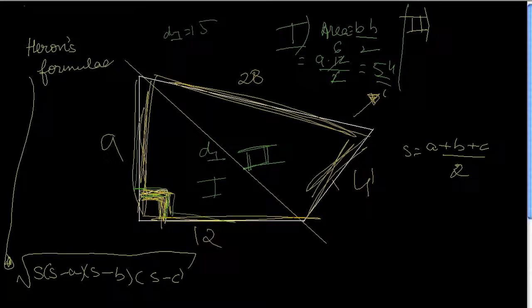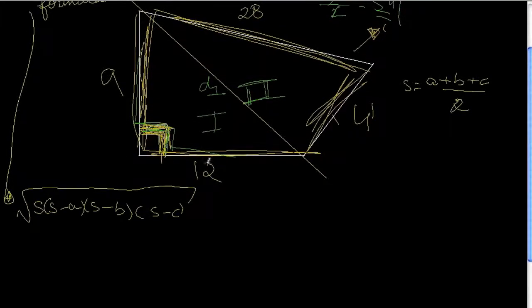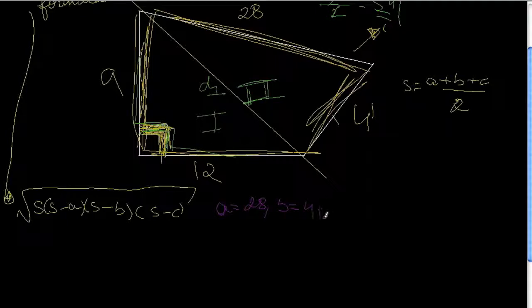So in this video, I'll continue with telling you how to find the area of any quadrilateral, case 2. So in triangle 2, let's define A as 28, B as 41, and C as a diagonal, which we just found out to be 15.